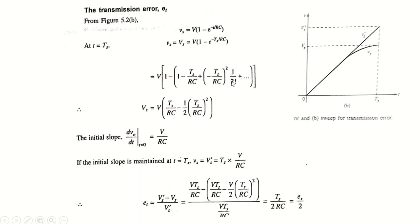Expanding the e^(−x) term in terms of the infinite series: VS = V × (1 − (1 − TS/RC + (TS/RC)²/2! − ...)). Considering only the first two significant terms, the 1s cancel, giving VS = V × TS/RC.